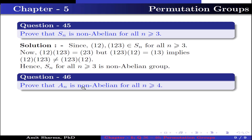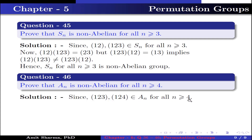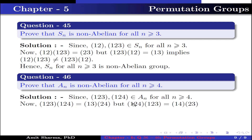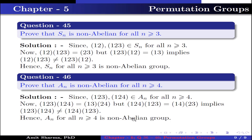Question number 46. Prove that An is a non-abelian group for all n ≥ 4. The permutations (1,2,3) and (1,2,4) both belong to An for all n ≥ 4. The product (1,2,3)∘(1,2,4) = (1,3)(2,4), because: 1 maps to 3, 3 maps to 1, 2 maps to 4, and 4 maps to 2. Similarly, the product (1,2,4)∘(1,2,3) = (1,4)(2,3). Since (1,2,3)∘(1,2,4) ≠ (1,2,4)∘(1,2,3), hence An for all n ≥ 4 is a non-abelian group.